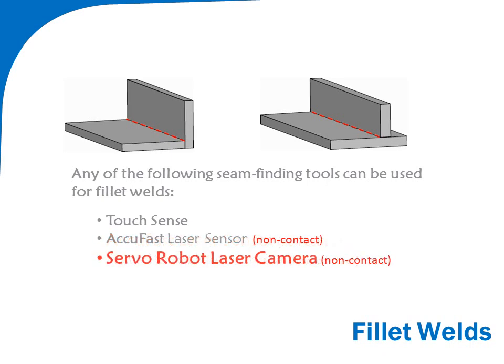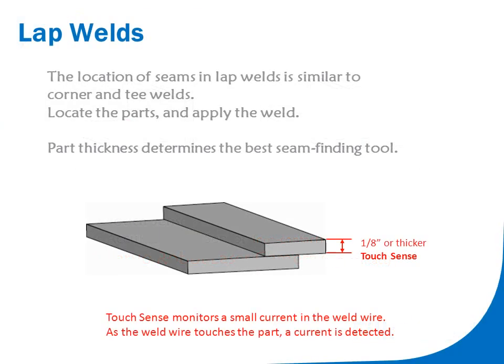And laser cameras. These are used to project the laser line and detect the two walls. They can reduce cycle time and provide data about joint gaps.